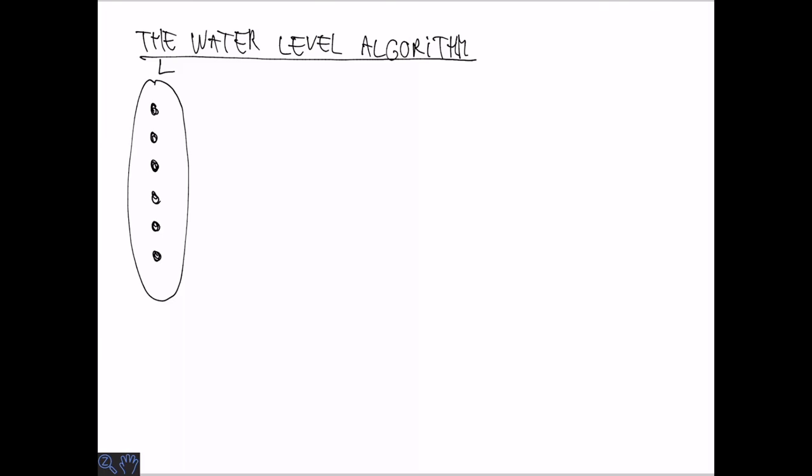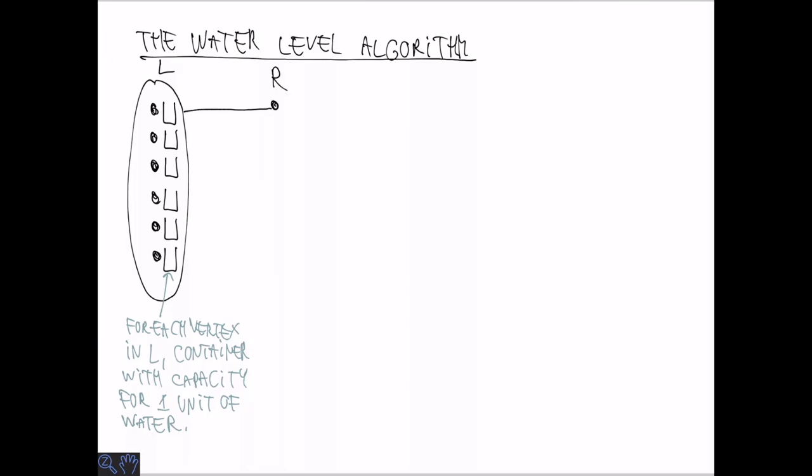We are going to study a very natural and simple algorithm for this problem called the water level algorithm. Here we think about each vertex on the left as a container able to hold at most one unit of water corresponding to how much they are matched. So basically, each of them we can imagine a small container. And whenever a vertex comes on the right, it basically has one unit of water that it can distribute among the vertices that it has edges to. So we somehow need to pour up to one unit of water to the adjacent vertices. Or maybe it is beer, because I am going to draw it in a nice yellow color. So here we could, for example, split 50-50.